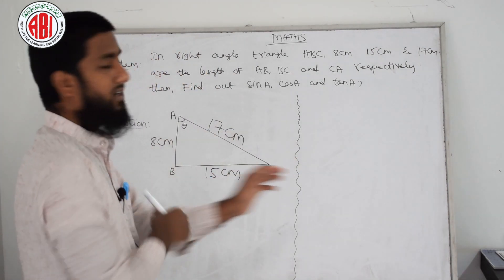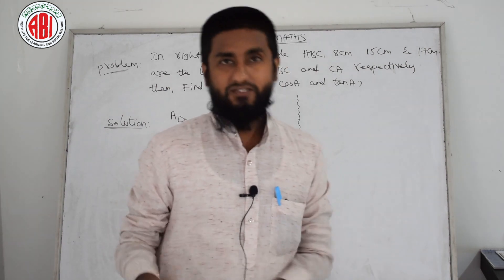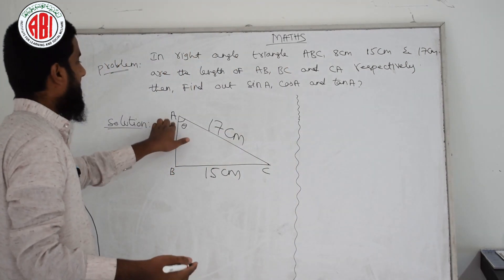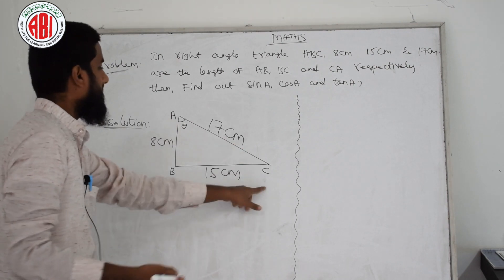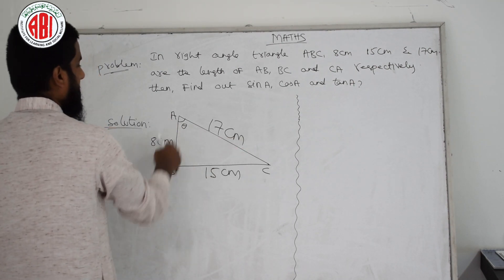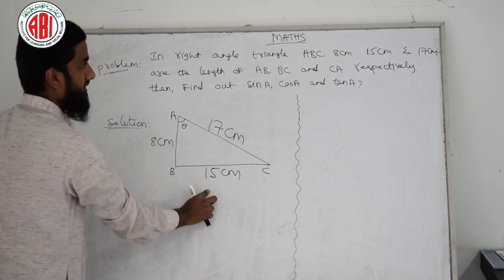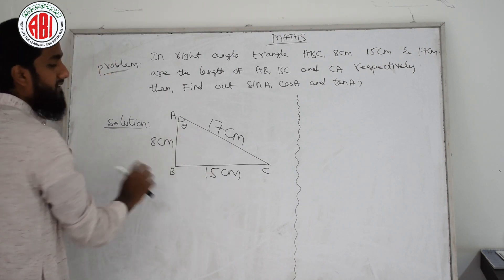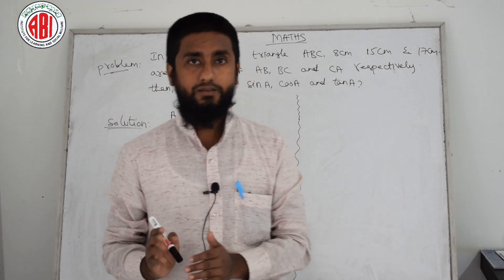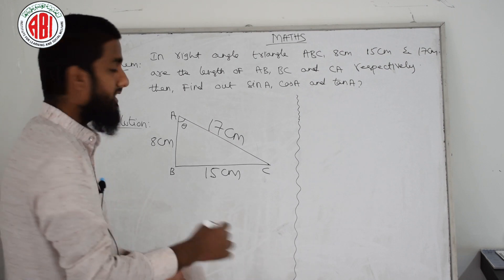You need to understand — math is not a subject to memorize, just understand. Theta is at A. In triangle ABC, the longest side is 17 cm. Opposite to theta we mark 15 cm, and the remaining side AB is 8 cm. That's the triangle drawing part. Now we need to write the theoretical solution.